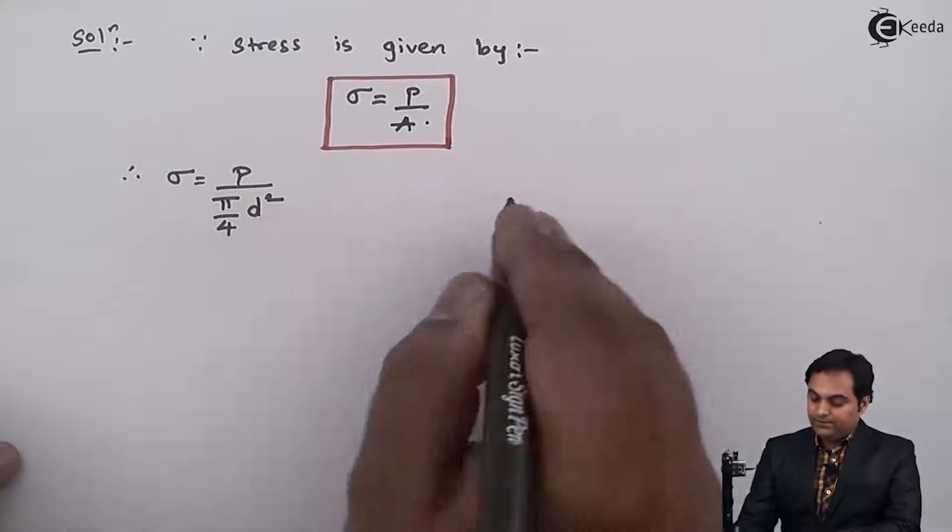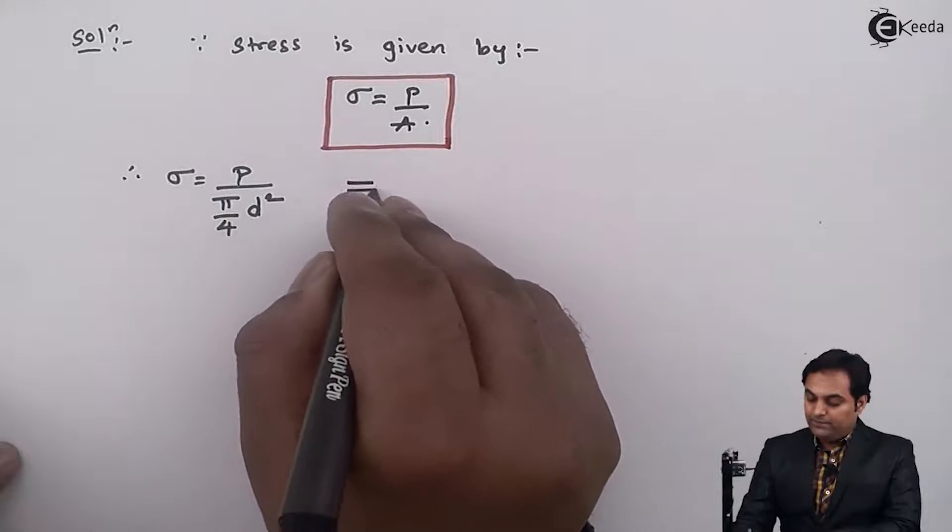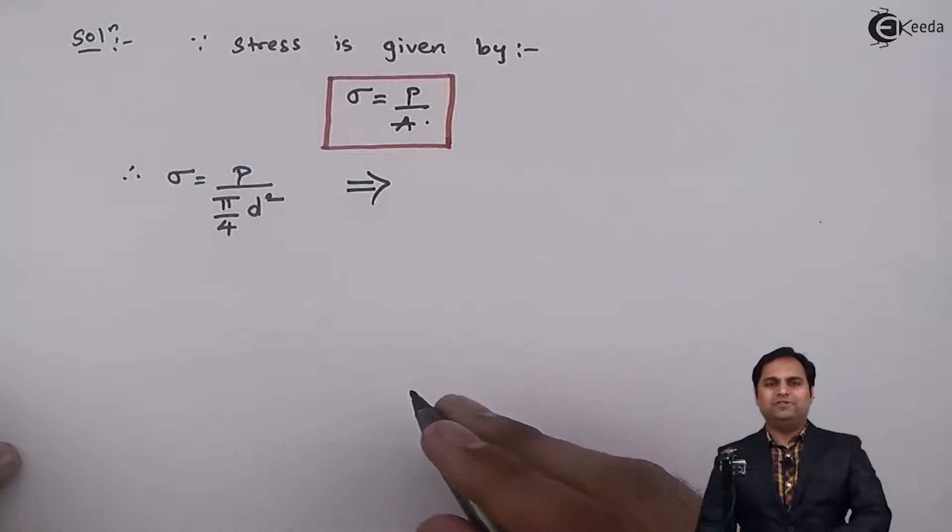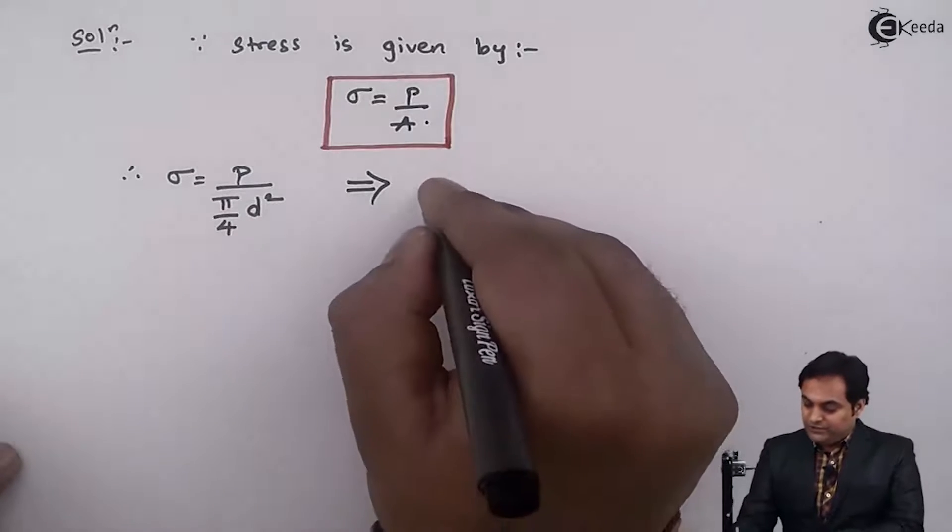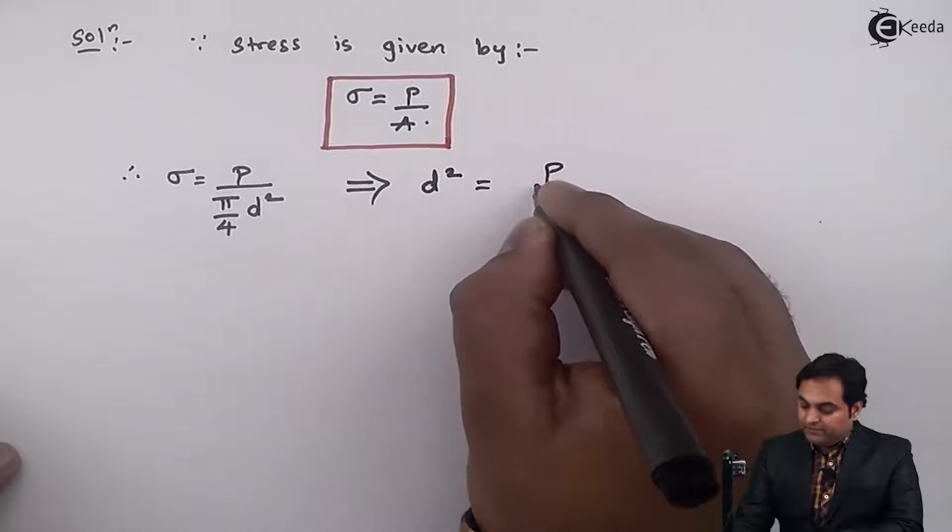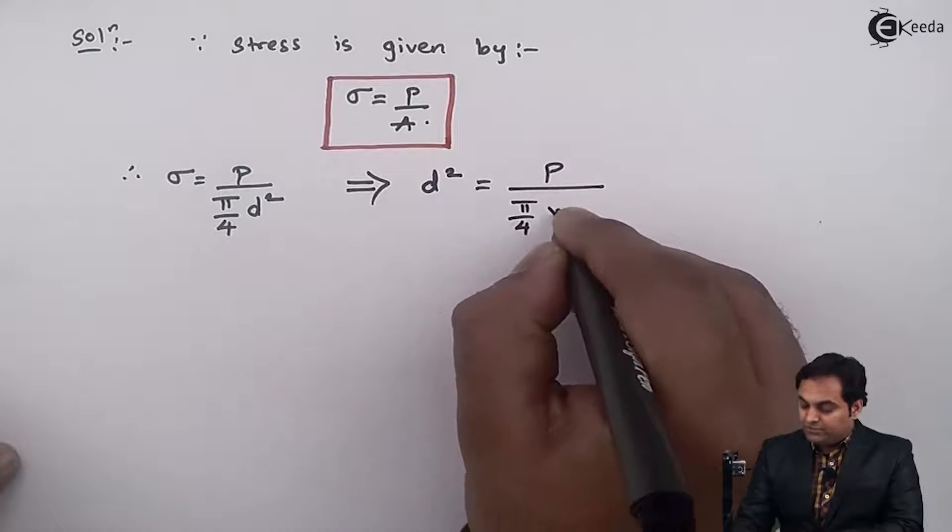Next, here this would be I will shift D square on the other side, because diameter is what we have to calculate. So here D square will be shifted onto the other side and next I have P upon pi by 4 into sigma.